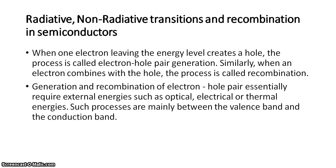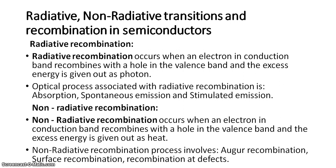Generation and recombination of electron-hole pairs require external energies. The external energies can be optical, electrical, or thermal energies. Such processes are mainly between the valence band and conduction band of a semiconducting material. What is the basic difference between radiative recombination and non-radiative recombination? In both cases there is a recombination of electrons in the conduction band with the holes in the valence band.